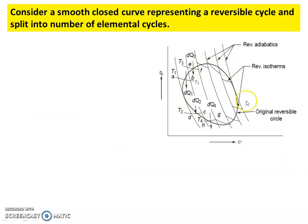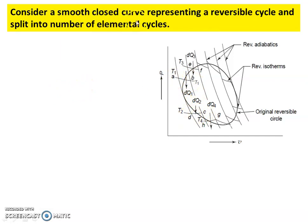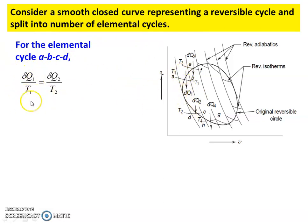Now consider a cyclic process — a closed curve — in the PV diagram. A number of inclined reversible adiabatic lines are dropped. The cyclic process is converted into a number of elemental Carnot cycles. Each elemental cycle has an isothermal line A-B, isothermal line C-D, reversible adiabatic line B-C, and reversible adiabatic line D-A. Consider a smooth closed curve representing a reversible cycle split into a number of elemental cycles. For elemental cycle A-B-C-D, we have δQ₁/T₁ = δQ₂/T₂.